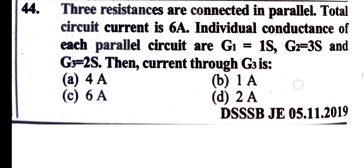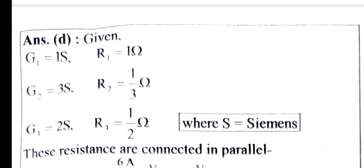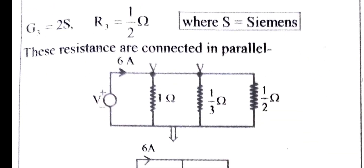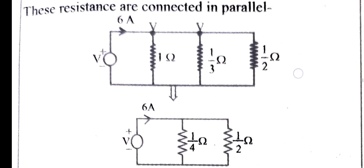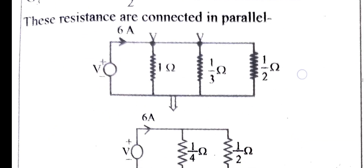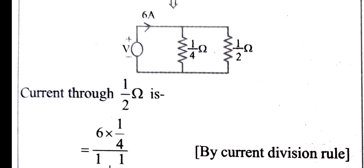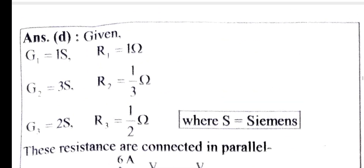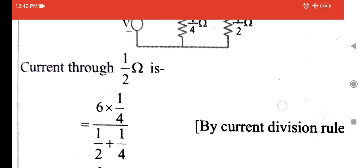Three resistances are connected in parallel. Total circuit current is 6 A. Individual conductance: G1 is 1 S, G2 is 3 S, G3 is the current through G3. The corresponding resistance of G3 is 1 by 2 ohm. Using the current division rule, the current through G3 is calculated.